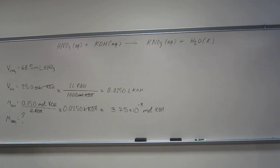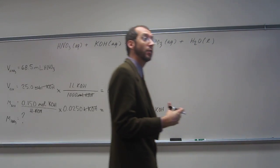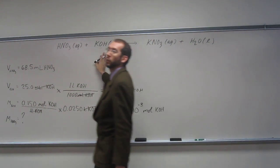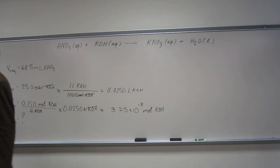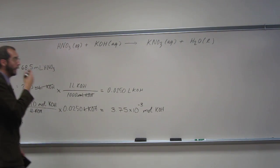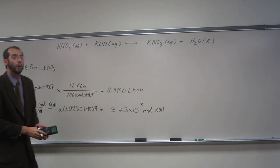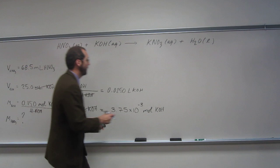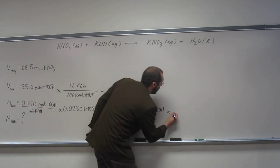So from there, we should be able to figure out the number of moles of nitric acid, HNO3. How would we do that? Well, good job guys. We would look at the chemical equation and get that information from there. So what do we know about the mole to mole ratio? One to one.